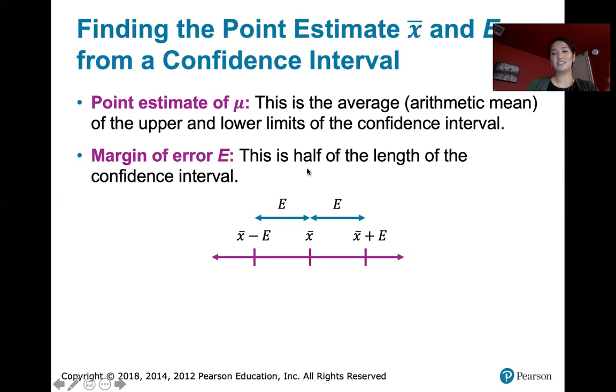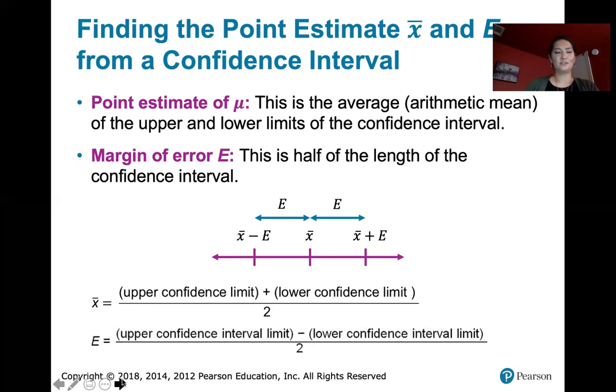So I want the margin of error, I just take the length of the interval, which is that top value minus that bottom value, and then I divide by two so that I get half the length. So it's easy enough to find x̄, that's our sample mean. We just add the two limits and divide by two. And then to find the margin of error, we subtract the lower limit from the upper limit and divide by two to get half that length.